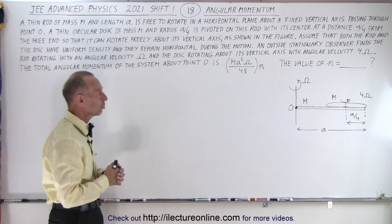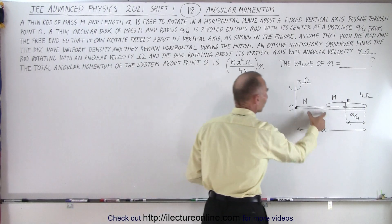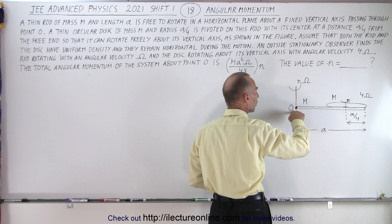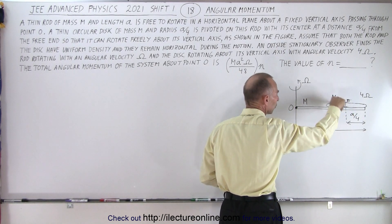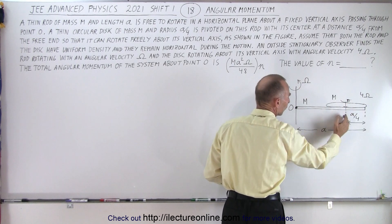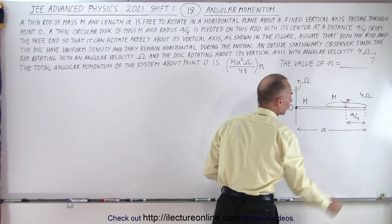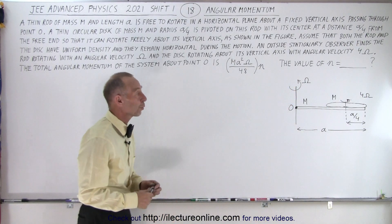So they provided us with a drawing. Here we have the rod of length a rotating about O. It has mass m. We have a disk with mass m rotating with its center a over 4 from the free end of the rod rotating at an angular velocity of 4 omega.